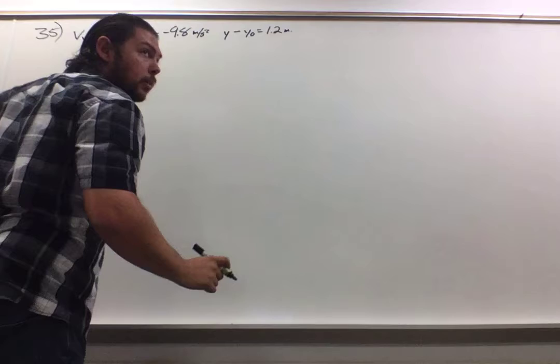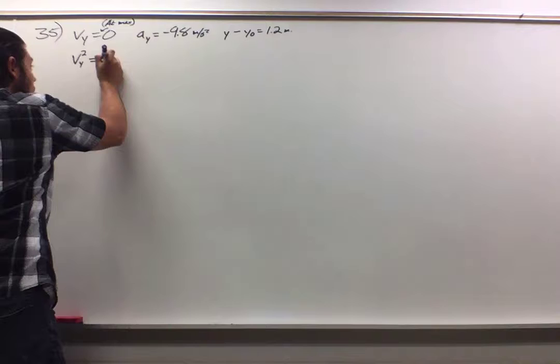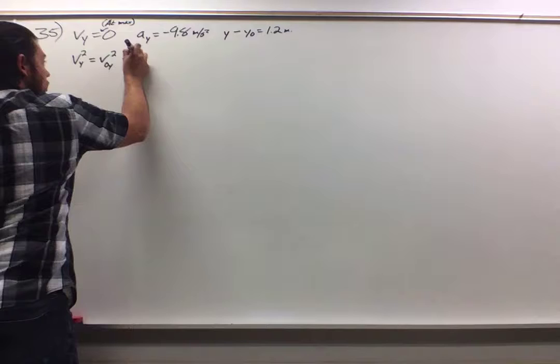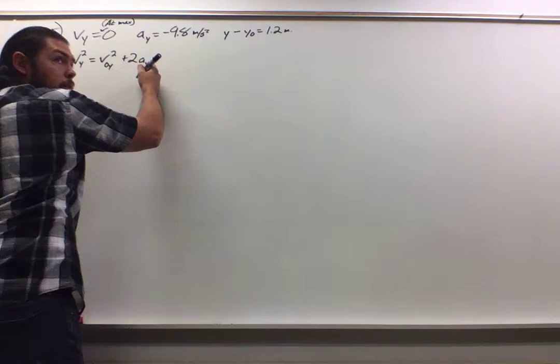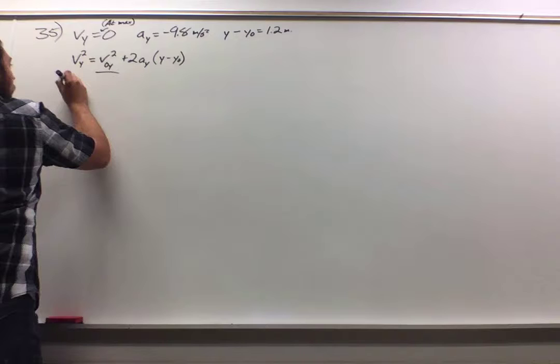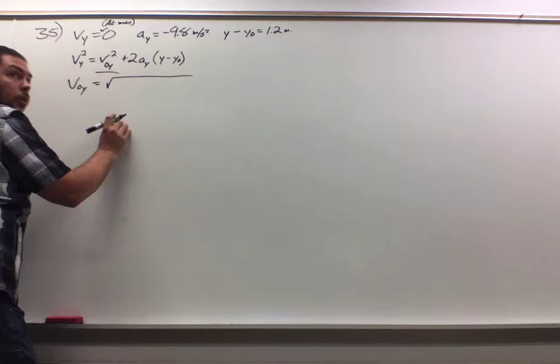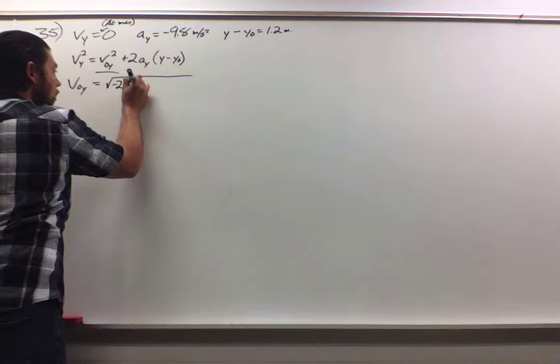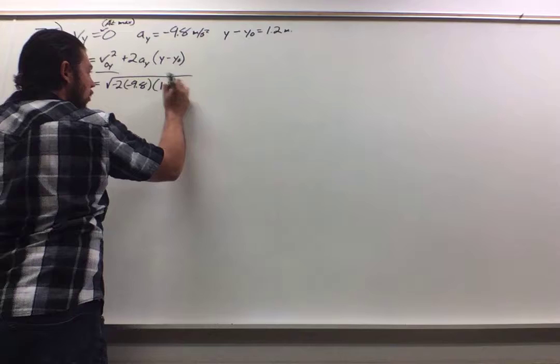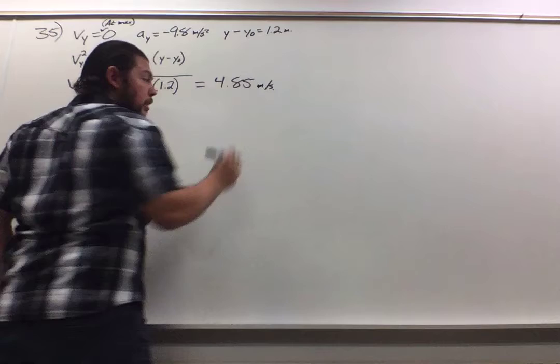So, we're going to take V sub Y squared is going to be equal to V sub 0 Y squared plus 2 times A sub Y of Y minus Y sub 0. All right. That's what we're looking for right here. So, we do V sub 0 Y, and that's going to be equal to the square root of negative 2 times by negative 9.8 times by 1.2. That's going to give us a grand total of 4.85 meters per second. I apologize. This was A.